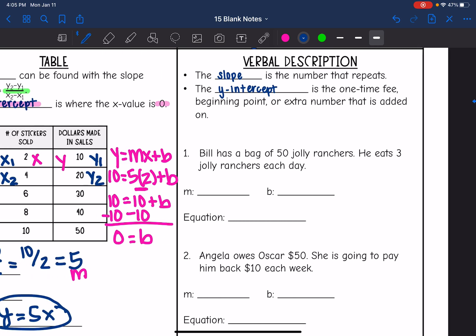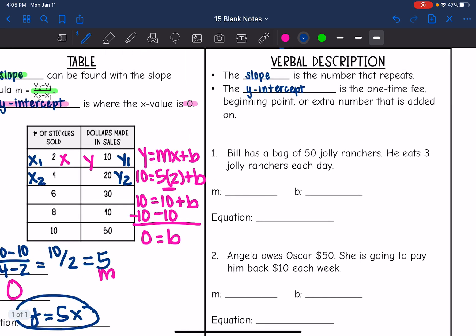Last representation, we are going to go over verbal descriptions. So the slope is the number that repeats, and usually we have those words like each, every, and per. And then the y-intercept is that one-time fee or beginning point, some sort of extra number that's added on. So we just need to read the verbal description and figure out which number is the slope and which one is the y-intercept.